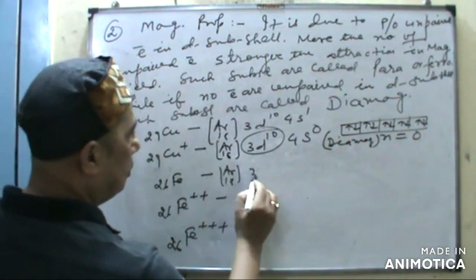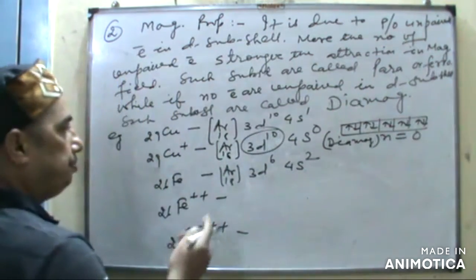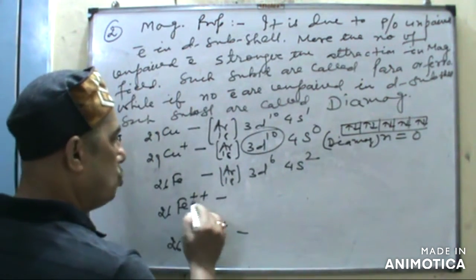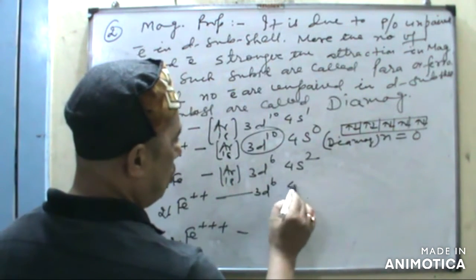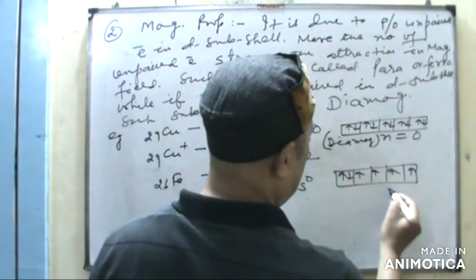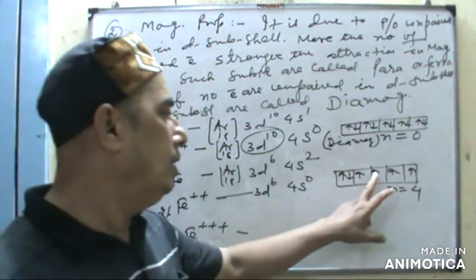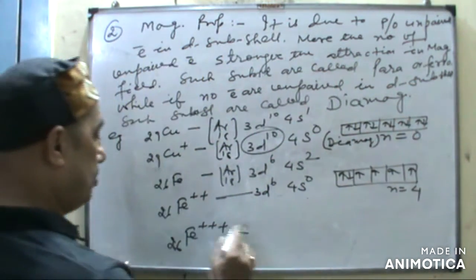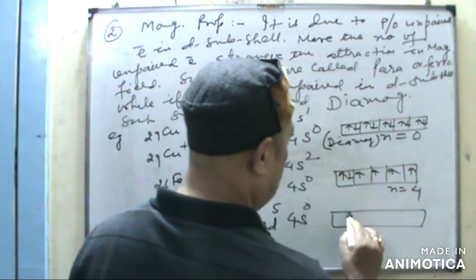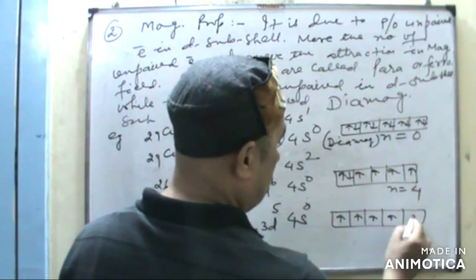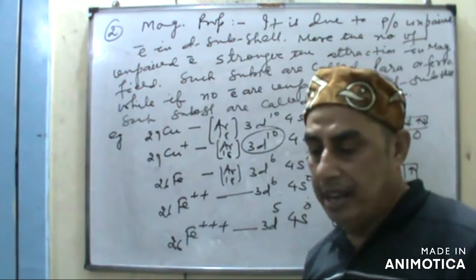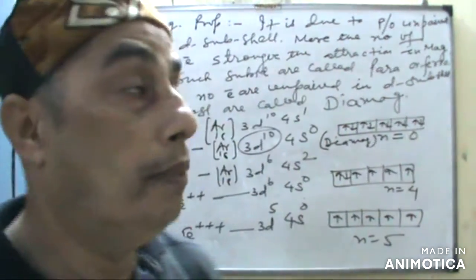For iron (atomic number 26), the configuration is 3D6 4S2. For iron 2+, the configuration becomes 3D6 with 4 unpaired electrons. For iron 3+ (ferric), the configuration becomes 3D5 with 4S0, giving the maximum number of 5 unpaired electrons and the strongest attraction in the magnetic field. These substances are known as paramagnetic.